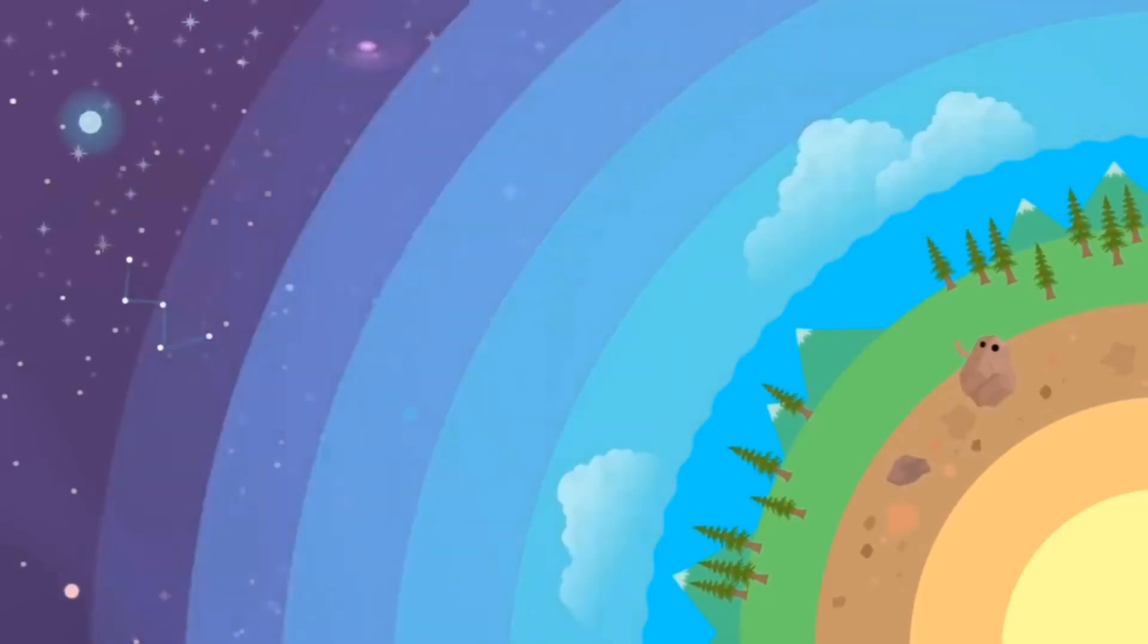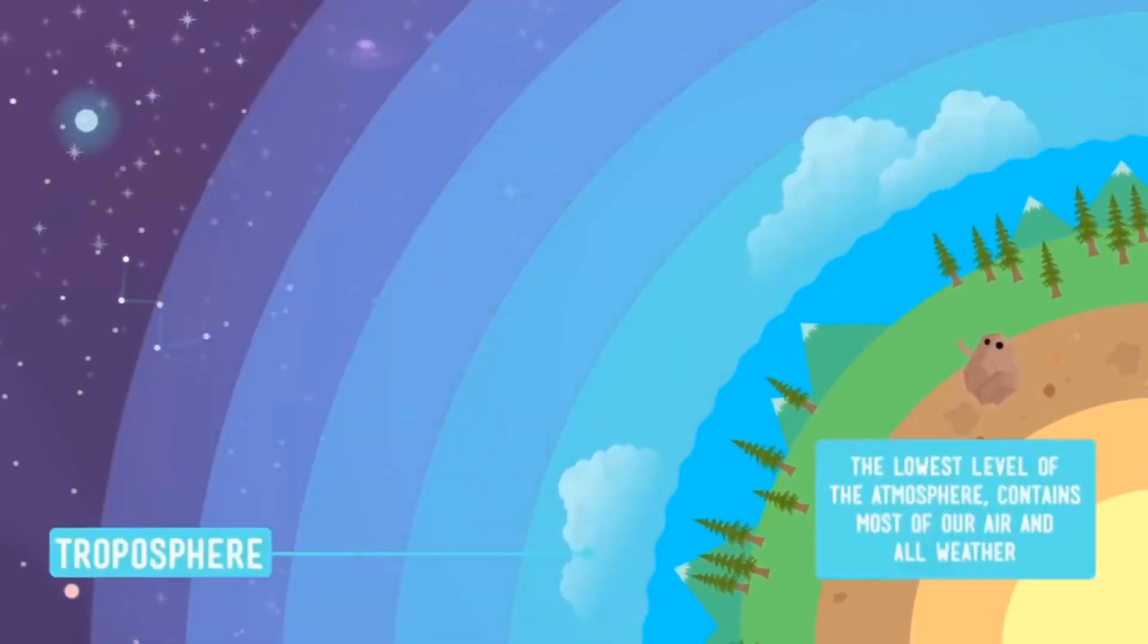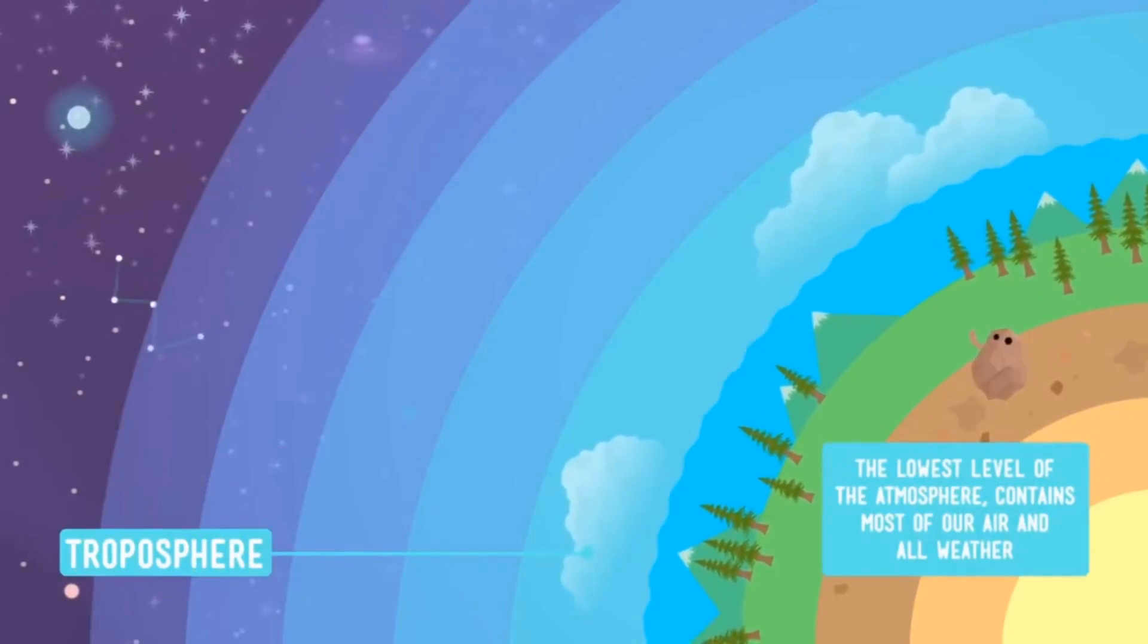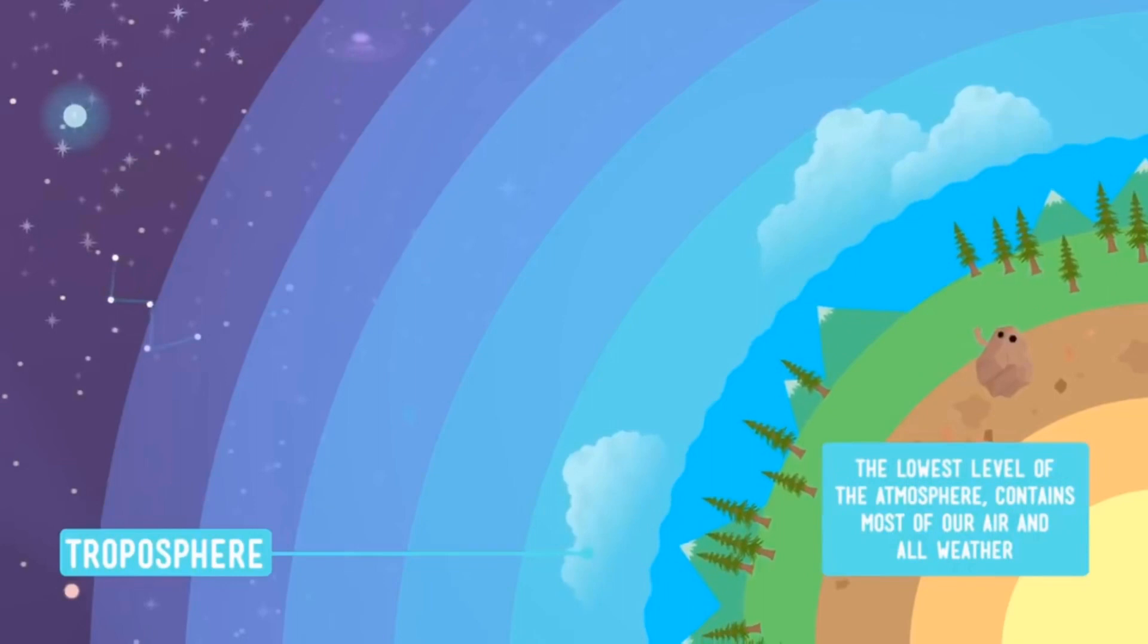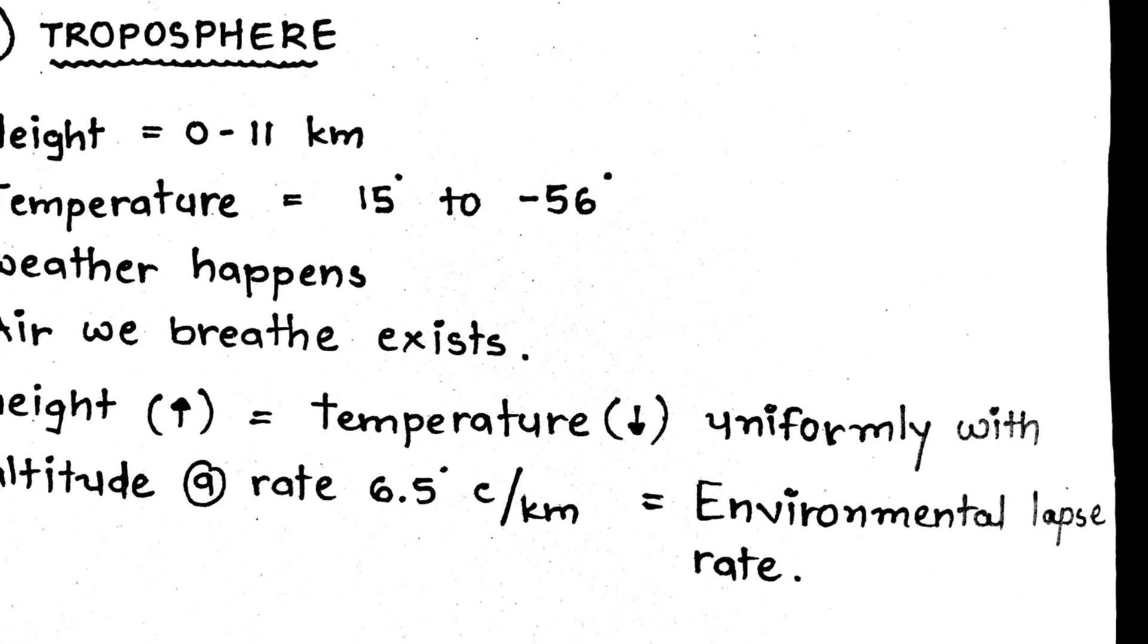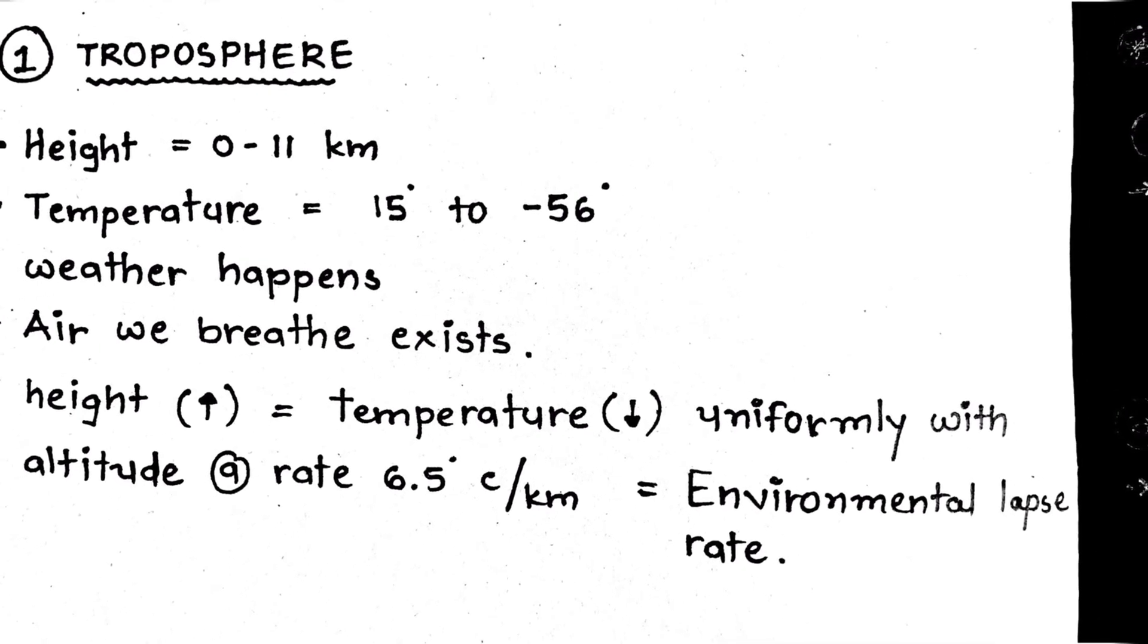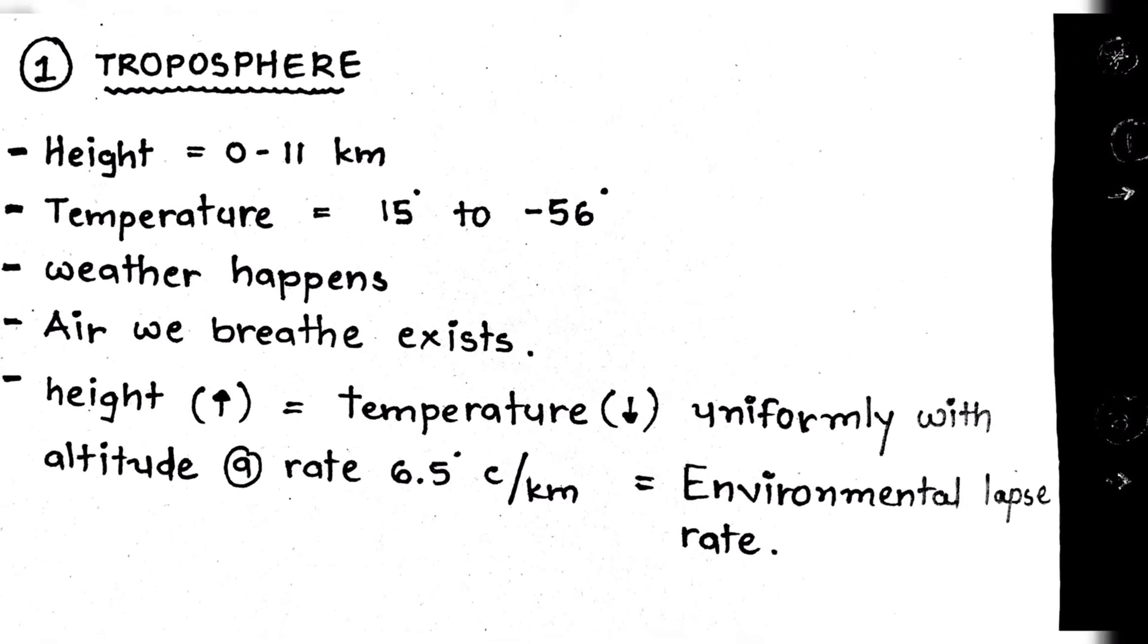First is troposphere. Troposphere is in the range of 0 to 11 kilometers and the temperature is between 15 to minus 56 degrees Celsius. It is the bottom-most layer of the atmosphere.